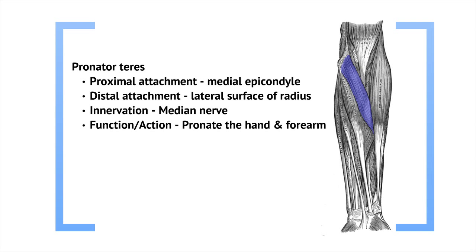We're going to use the structure that I proposed in the last lecture. The first muscle is the pronator teres. Its proximal attachment is the medial epicondyle, and its distal attachment is the lateral surface of the radius. It's innervated by the median nerve, and its function, as its name suggests, is to pronate the hand and the forearm.